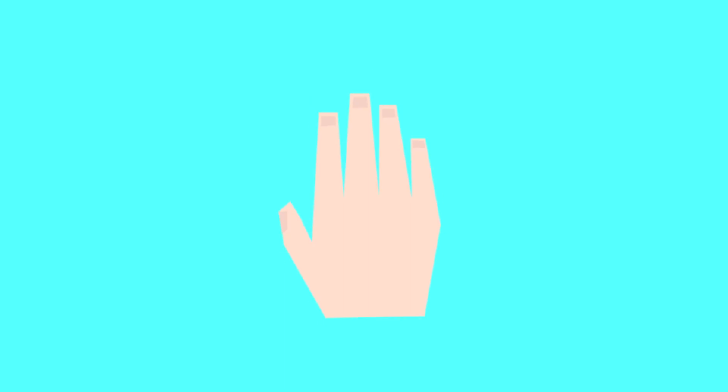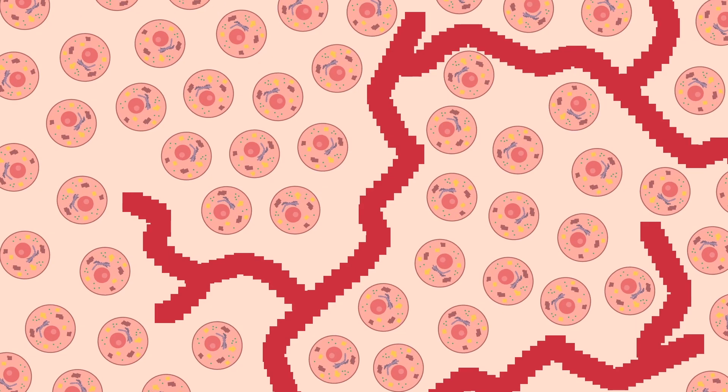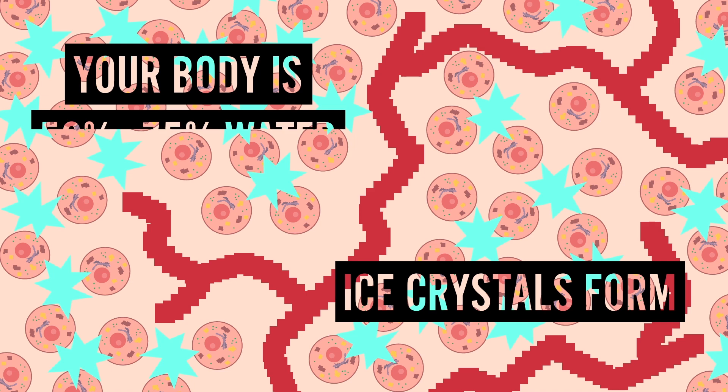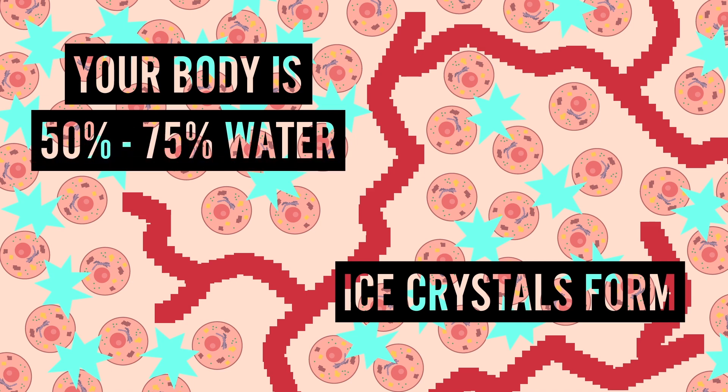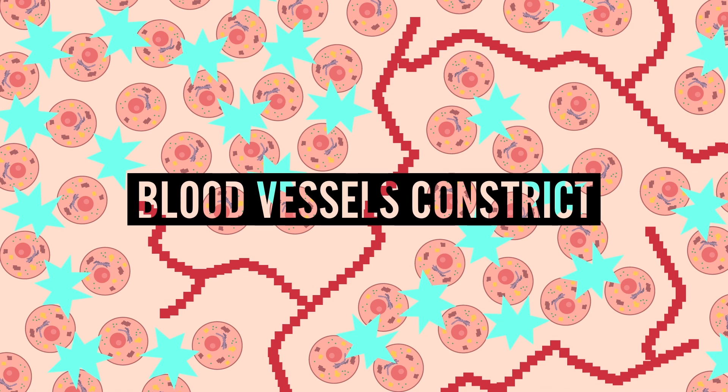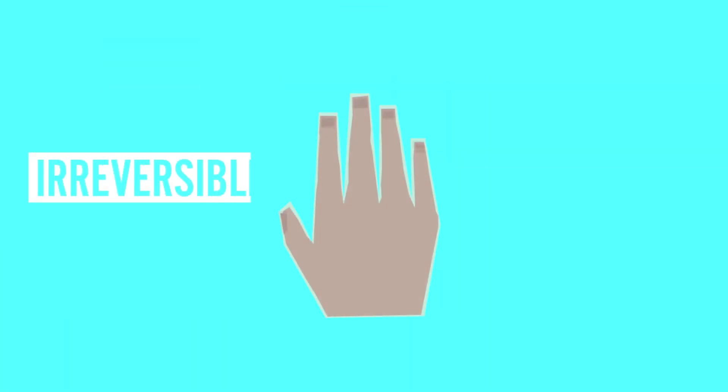So how does this all relate to your hand and the liquid nitrogen? As your hand is exposed to the intensely cold temperature, ice crystals will form in the spaces between cells. Remember, your body is anywhere between 50 to 75 percent water, and that's a lot that can freeze. Your blood vessels will also constrict, lowering blood flow to the hand and consequently decreasing the amount of oxygen that reaches the cells. And the combination of these effects can cause irreversible damage.